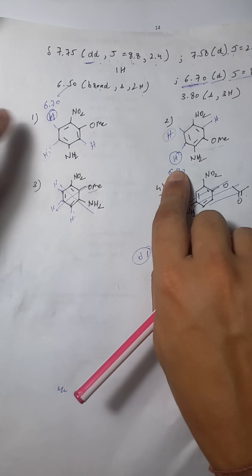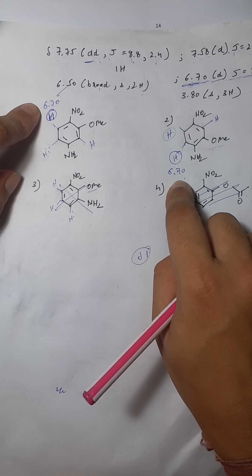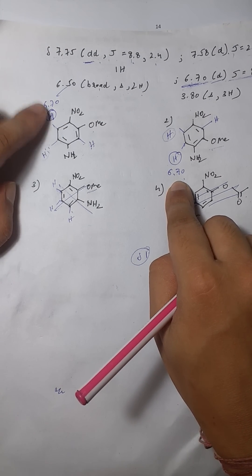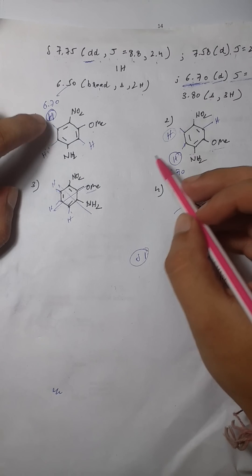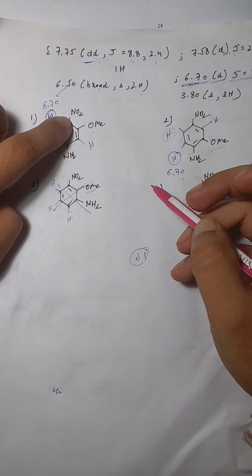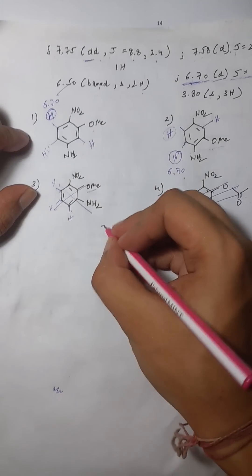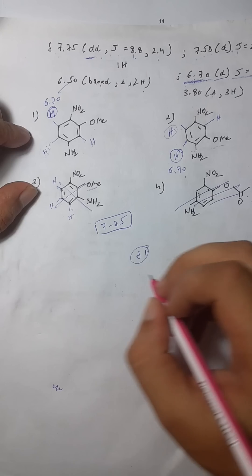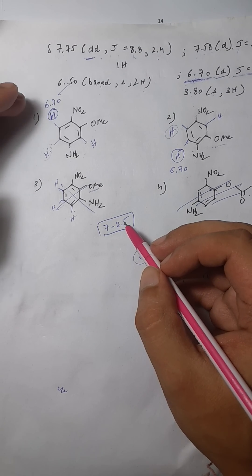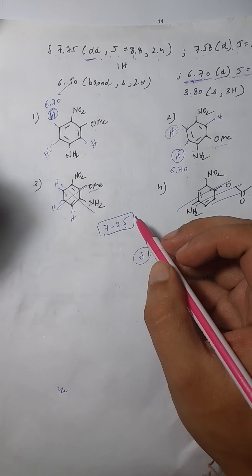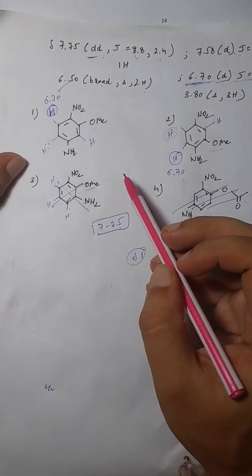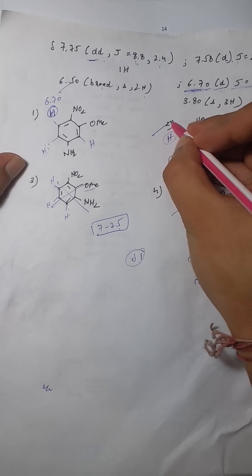Now, which of those two 6.7 candidates is more feasible for shielding? In one option the amine group is close to that hydrogen, while in the other option a nitro group is in the ortho position. The nitro group is electron-withdrawing, so that proton would be highly deshielded with a very high value. Therefore the 6.7 shielded hydrogen belongs to the option with the amine nearby, and we can say our answer is option number two.